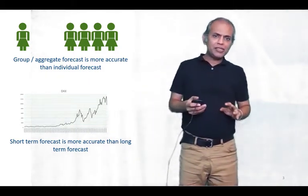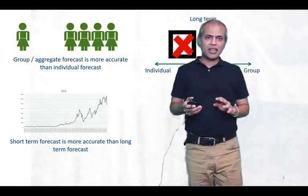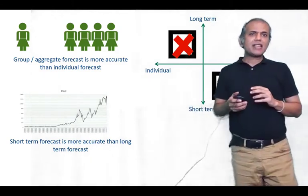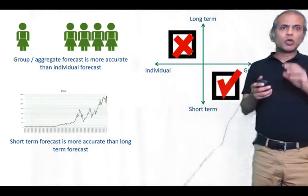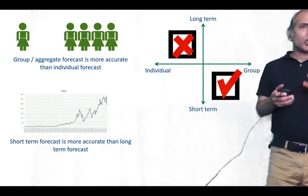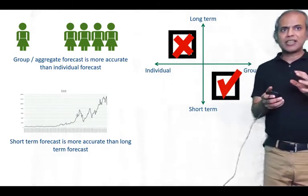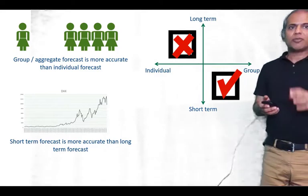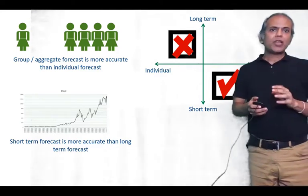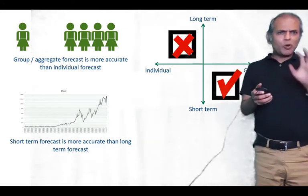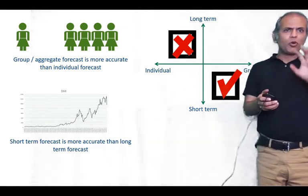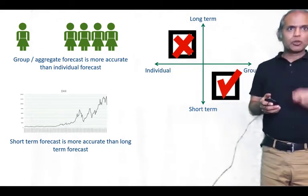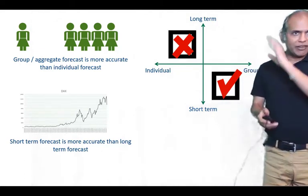We combine these two principles in this graphic, where we say that group and short-term forecasting is always more accurate than long-term and individual forecasts. So as much as possible, if you're going long-term, you must use grouped forecasts. Let me give you two examples to clarify this visual.